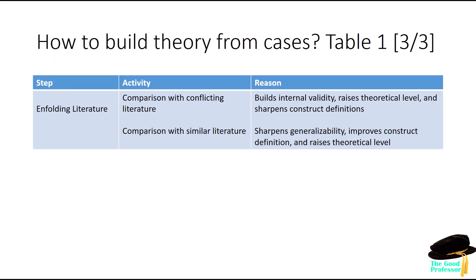The next step is enfolding literature. This is comparison with conflicting literature initially to build internal validity, raise theoretical level, and sharpen construct definitions. So really here you're looking for literature that disagrees with you, and you can say: my empirical evidence says that in this context, this current theory does not apply, and this is why. You might also find similar literature where in your case it's the same, so you can confirm that this is true.